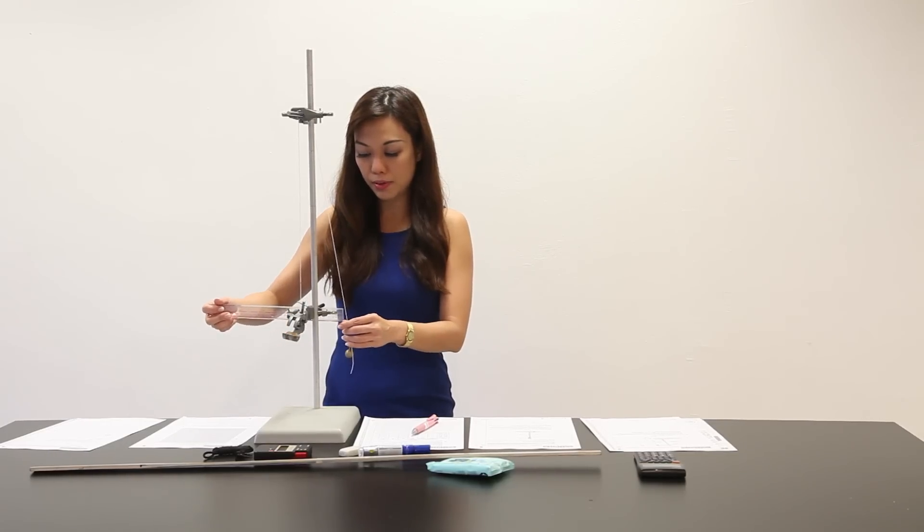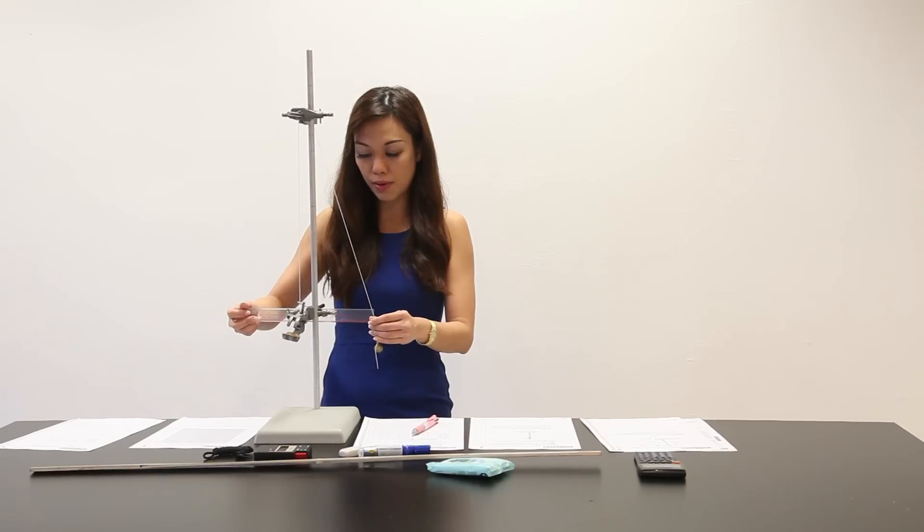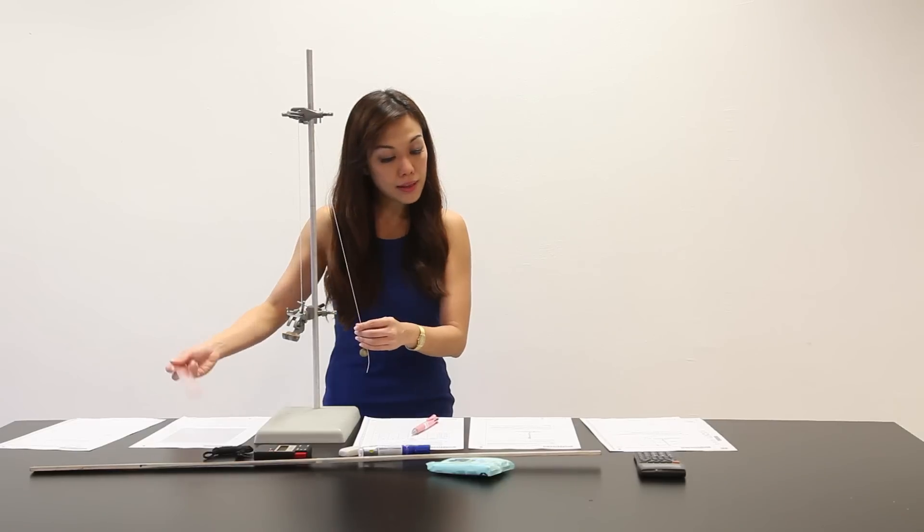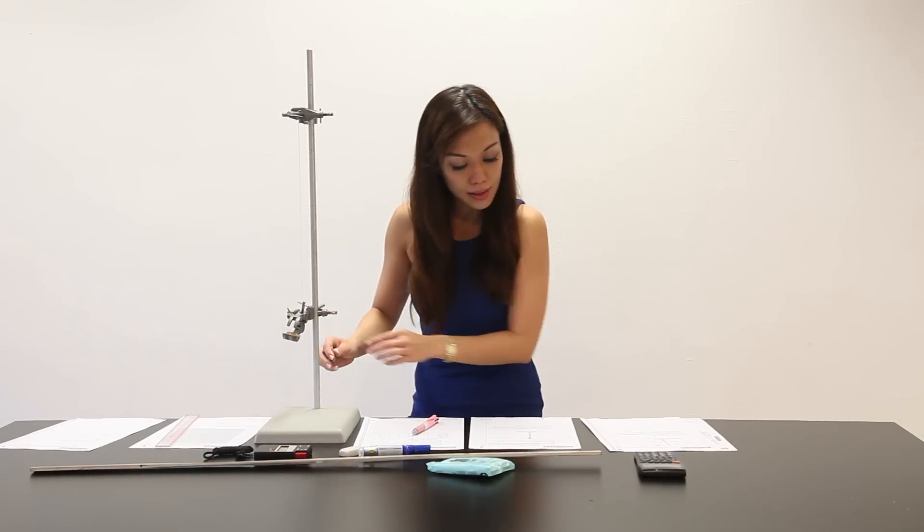So, I'm supposed to estimate to move this bar around 5 to 10 cm away from the vertical position. So, here is 5 cm is around here. 5 to 10 is around here. So, this is an estimation and I will release it.